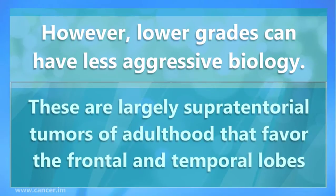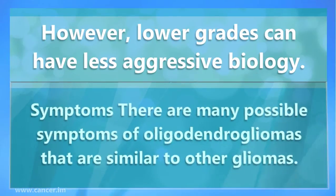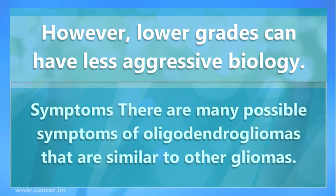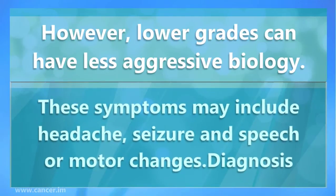These are largely supratentorial tumors of adulthood that favor the frontal and temporal lobes. There are many possible symptoms of oligoastrocytomas that are similar to other gliomas. These symptoms may include headache, seizure, and speech or motor changes.